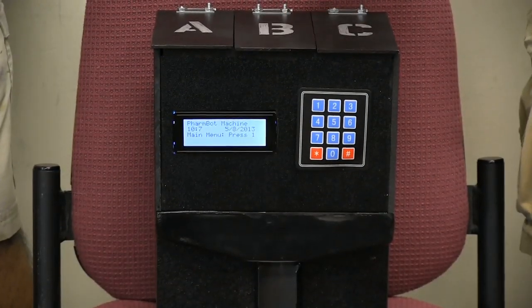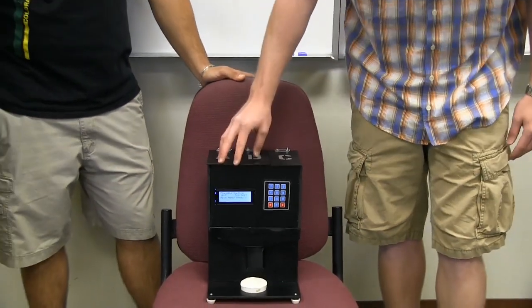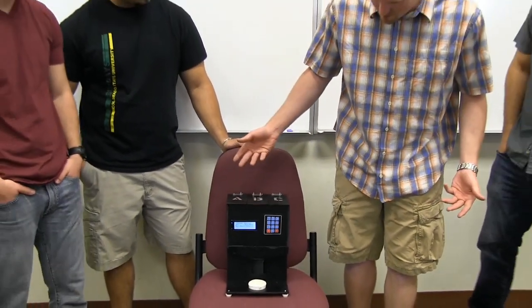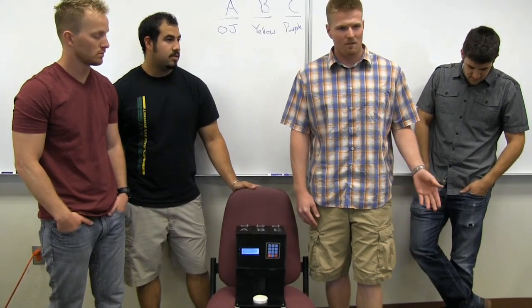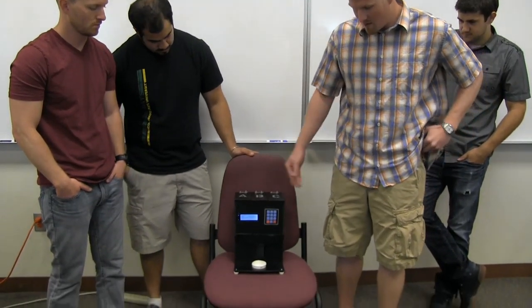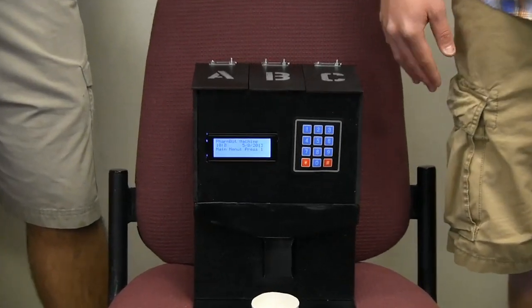We have an Arduino that runs a program with three different menu states. The first menu state displays the title of it, farm-bot machine, along with the current time and date. For the current time and date, we used a real-time clock that was an internal program for the Arduino.